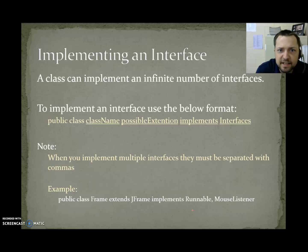Implementing an interface. A class can implement an infinite number of interfaces. To implement an interface, use the following format: public class, whatever you want to name it, any possible extension, like extends some class, space, implements, and then interfaces. And those interfaces can be separated with a comma. Example: public class frame extends jFrame. So its parent class is jFrame.